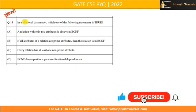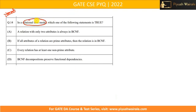Let us read the question first. In a relational data model — our database is basically a relational data model because we store data in different tables and there is some relationship among the tables. This is what a relational schema is. Now the question is: which one of the following statements is true?